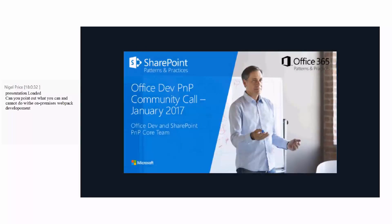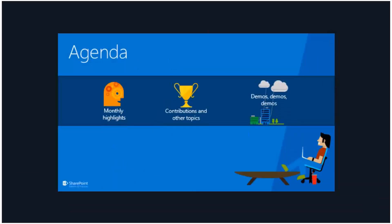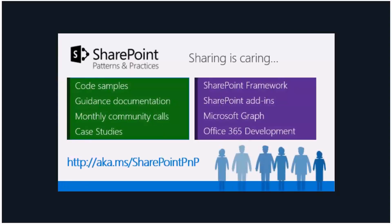The next special interest group call for PnP provisioning, PowerShell, and CSOM core is tomorrow at 7 a.m. PST or 5 p.m. Central European time. We have a typical agenda: we'll go through the monthly highlights — what has happened, what are the contributions, what's coming, what has been contributed, and what are the changes. The presentation will take roughly 25 minutes, then we'll go to demos, and most likely have some time for Q&A at the end.